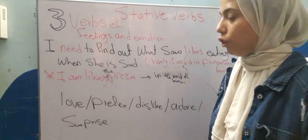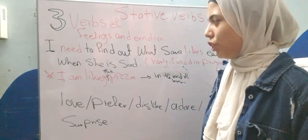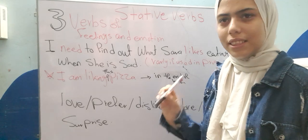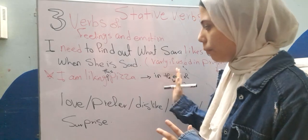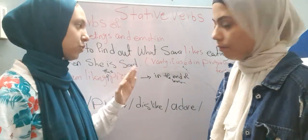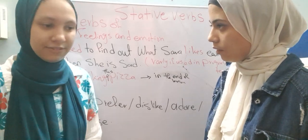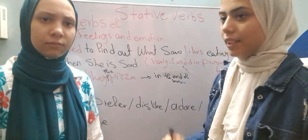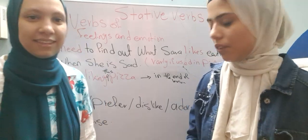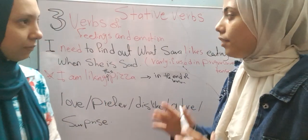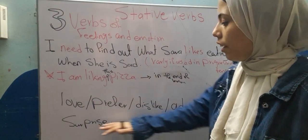The third category is verbs of feelings and emotions. For example: 'I need to know what Sarah likes when she is sad.' The stative verbs here are 'need' and 'like'. They are rarely used in progressive tenses, so avoid it. Examples include: love, prefer, dislike, adore, and surprise.